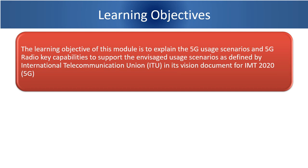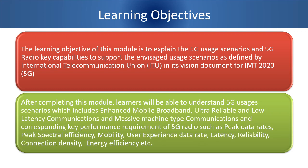The learning objective of this module is to explain the 5G usage scenarios and 5G radio key capabilities to support the envisaged usage scenarios as defined by International Telecommunication Union in its vision document for IMT 2020, i.e. 5G. After completing this module, learners will be able to understand 5G usage scenarios, which includes enhanced mobile broadband, ultra-reliable and low-latency communications, and massive machine type communications. We will also understand corresponding key performance requirements of 5G radio such as peak data rate, peak spectral efficiency, mobility, user experience data rate, latency, reliability, connection density, energy efficiency, and so on.